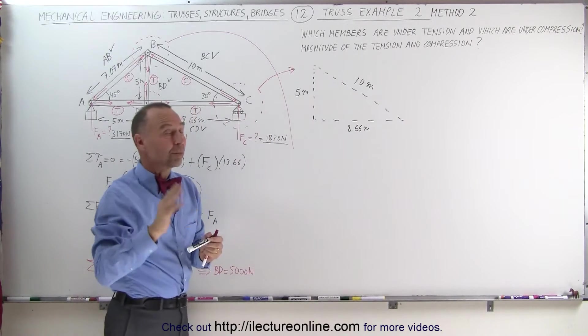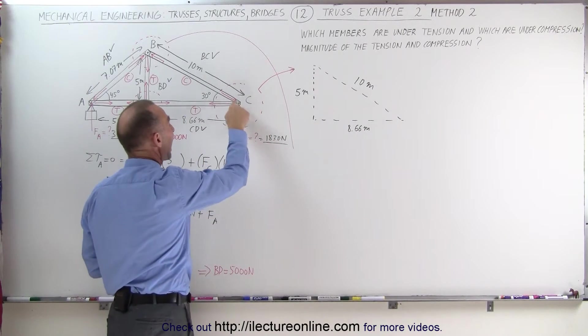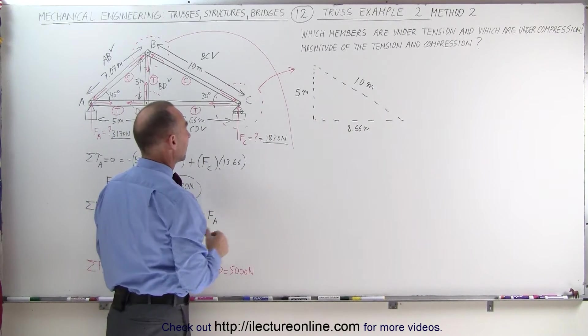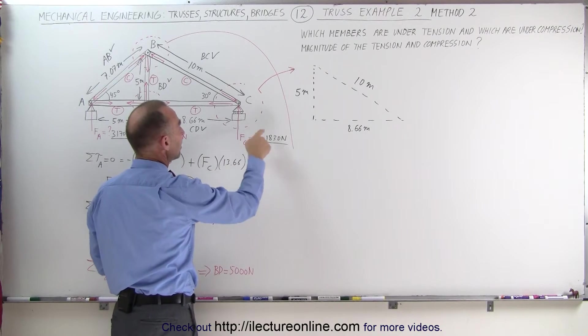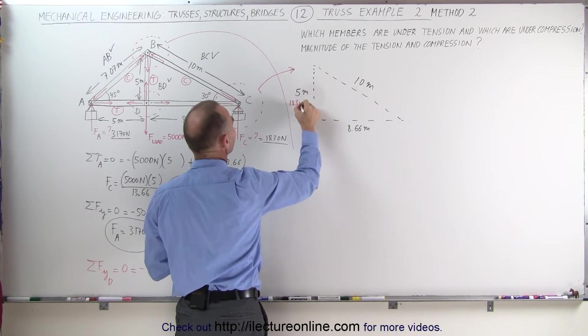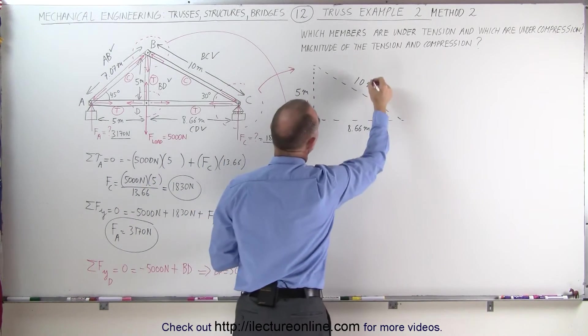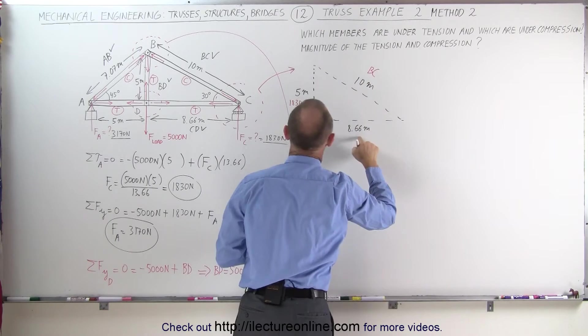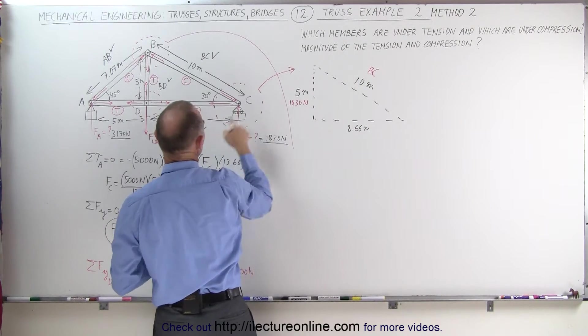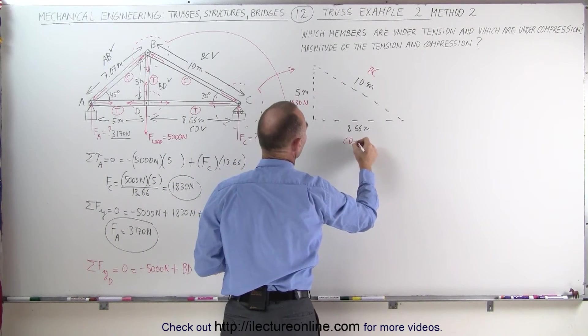The length of those beams are proportional to the force acting on this joint. Fc is equal to 1830 N. The force here from B to C is unknown, and the force here from C to D is also unknown.